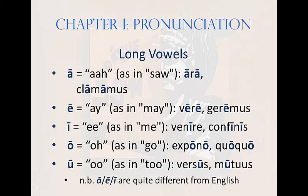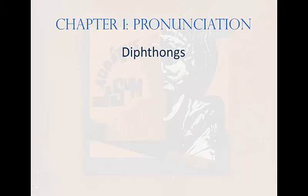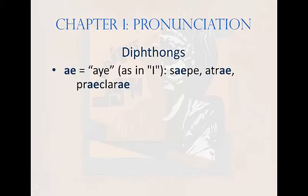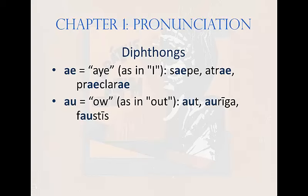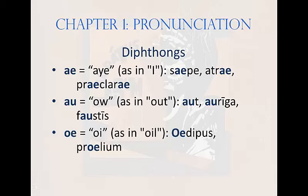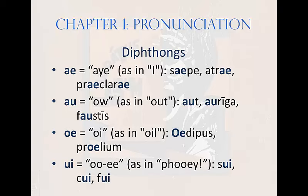Vowels can also be combined in pairs called diphthongs. Latin has four you should know. AE, pronounced 'I,' as in 'saipae,' 'atri,' 'praeclari.' AU, pronounced 'ao,' as in 'out,' 'auriga,' or 'faustis.' OE, pronounced 'oi,' as in 'oedipus' or 'proilium.' And UI, pronounced 'ui,' as in 'sui,' 'cui,' or 'fui' — and yes, there's a Latin word 'fui' too.